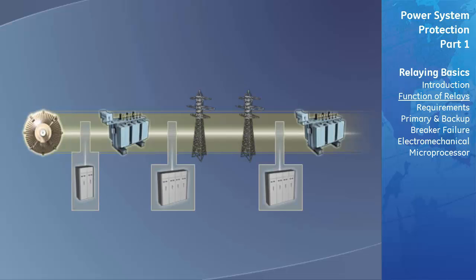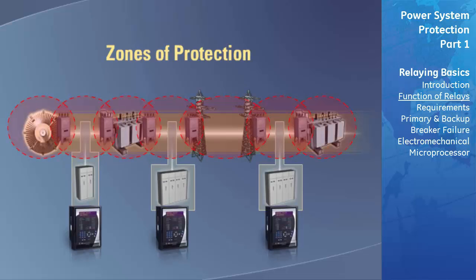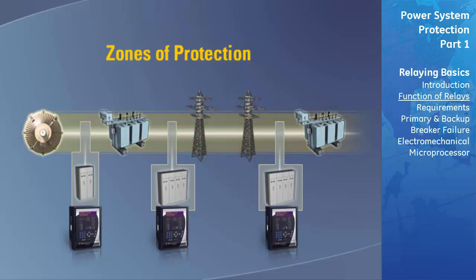One of the protection engineer's most powerful tools is the concept of zones of protection. The boundary of a protective zone represents the region that a particular protective element covers. It is necessary for these zones to overlap to ensure proper protection. If two zones did not overlap and a fault occurred at the boundaries of these zones, it is possible that no relays would be tripped.